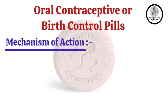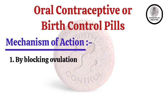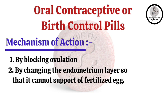When we talk about the mechanism of action, the first mechanism is blocking ovulation — these drugs block the release of eggs from the ovaries. Another mechanism of action is changing the lining of the endometrium so that it cannot support a fertilized egg.